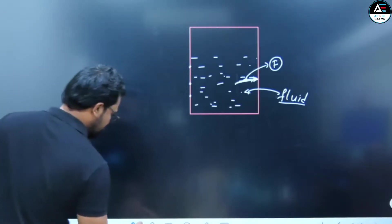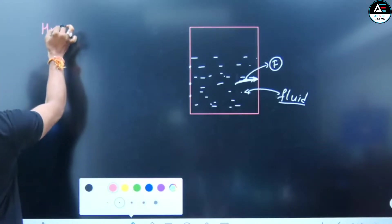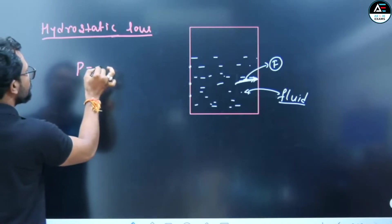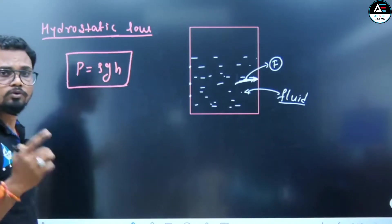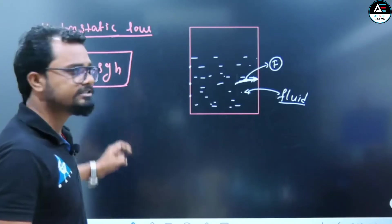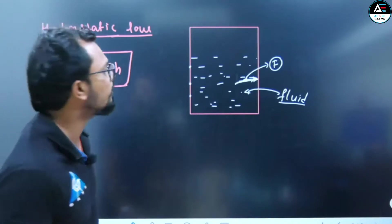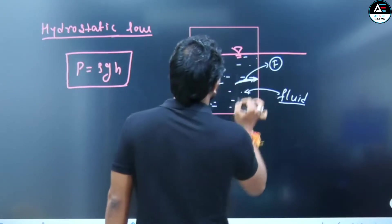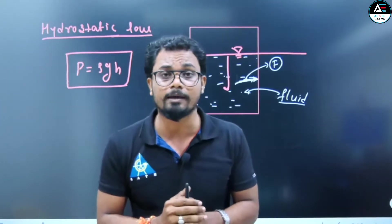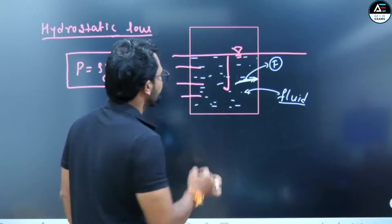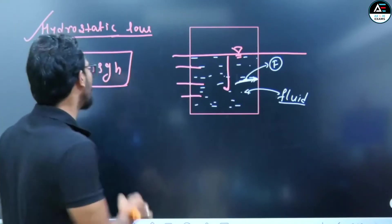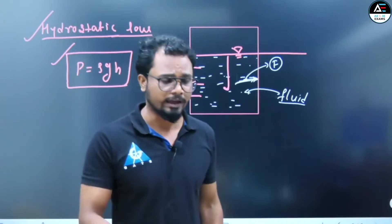According to the hydrostatic law, P = ρgh, where P is the pressure at a point, ρ is the density of the fluid, g is the gravitational acceleration, and h is the height from the free surface of the liquid. This is the hydrostatic law — P = ρgh. Is it clear?